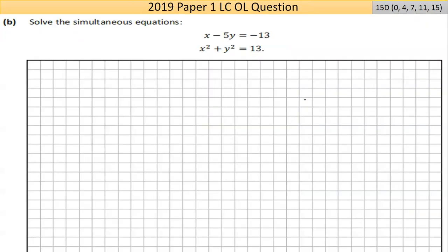Part B here is worth 15 marks. They give you a hint saying solve for x and y using simultaneous equations. What's going on here is this is a line and this is a circle. This circle has center (0,0) and radius of square root 13. That's supposed to be a circle.